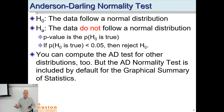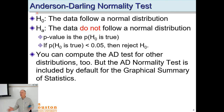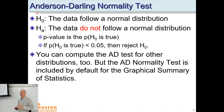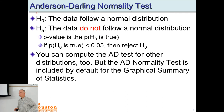The null hypothesis for the Anderson-Darling normality test is that the data follow a normal distribution — our baseline assumption that data is randomly distributed. The alternative hypothesis is that it does not follow a normal distribution. The p-value is the probability that it is a normal distribution. You can force the AD test to do other distributions, but in the graphical summary it defaults to normal.